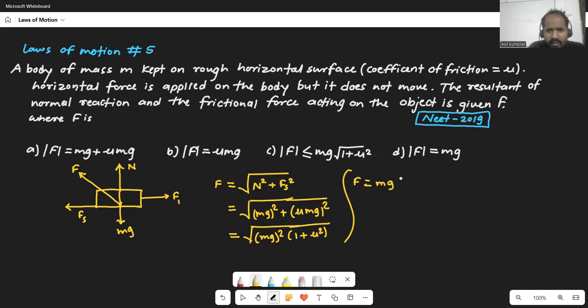So mg and root of 1 plus mu squared. This is your answer. Now look at here.